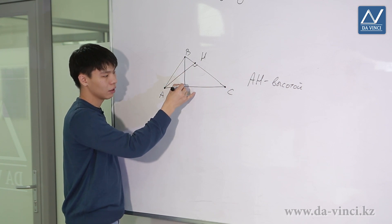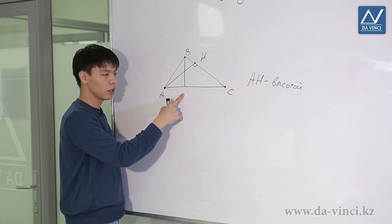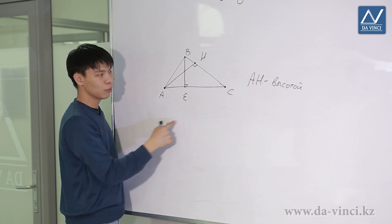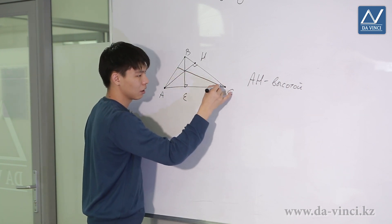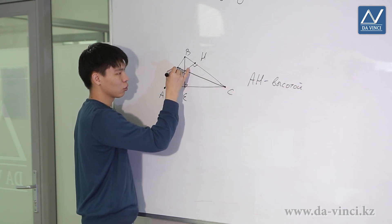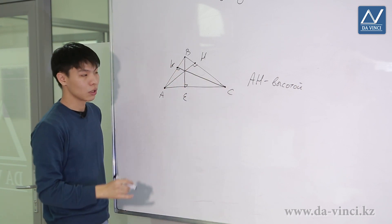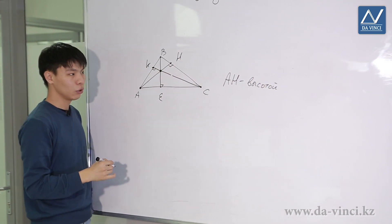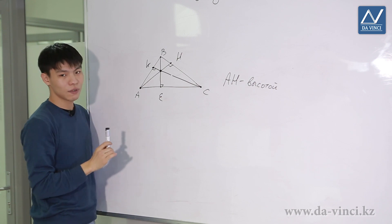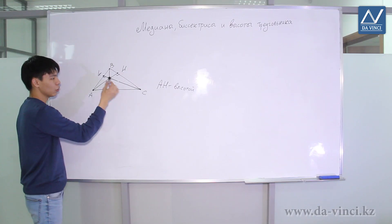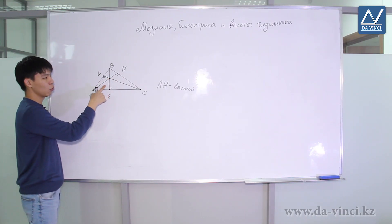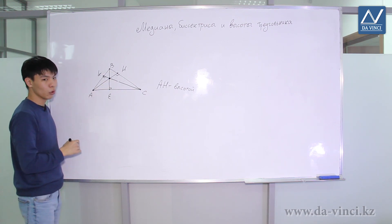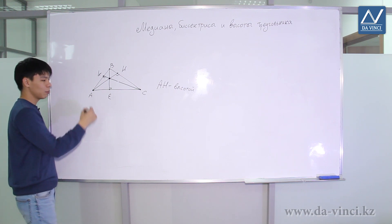I can drop an altitude from vertex B in the same way — that is, I drop the perpendicular from point B to side AC. Then BE will also be the altitude, and in the same way I can drop an altitude from point C — let's say I get point K — CK will also be the altitude. As in the three previous cases, all three altitudes intersect at one point. There is an important note for altitudes: all three altitudes intersect inside only if the triangle is acute, that is, if all the angles are acute.